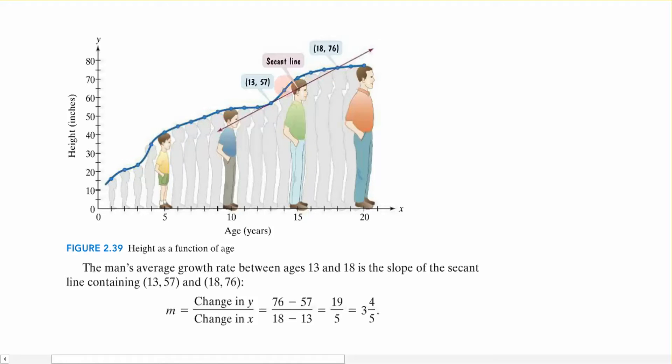And so you can see that I have kind of this plot going on, and it looks like a curve, but I could come back and say if I were to connect a straight line between the ages of 13 and 18, if I created a line right there, we have what's called a secant line.